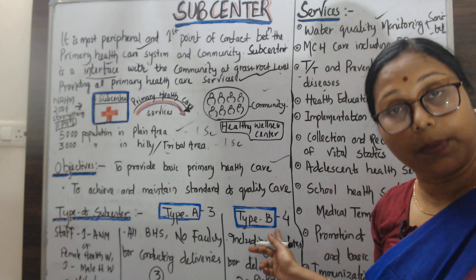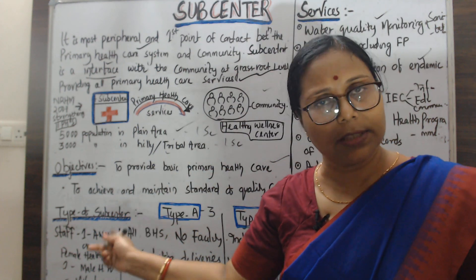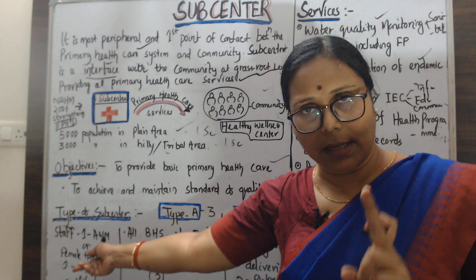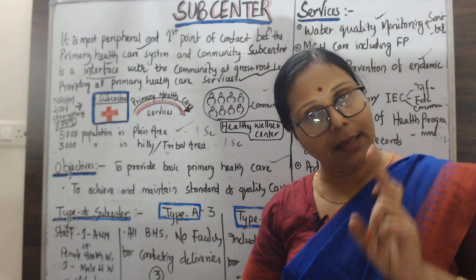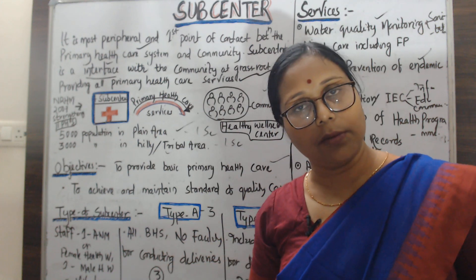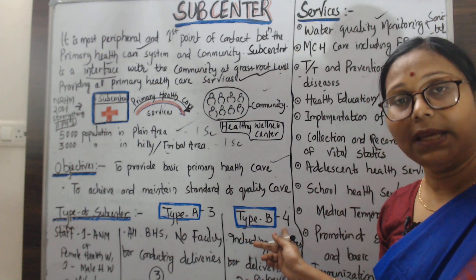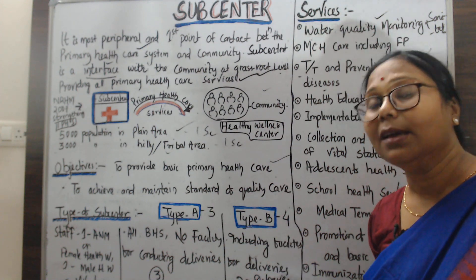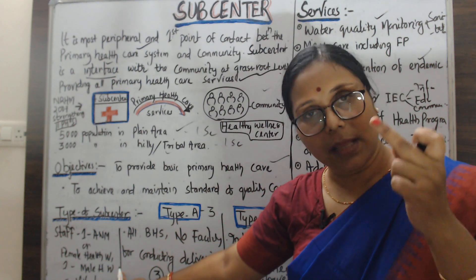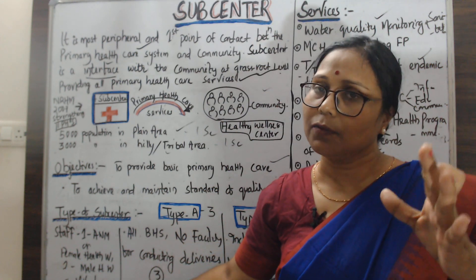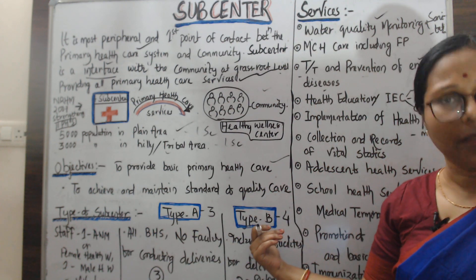Let's see the staffing pattern. In Type A, there are three staff: one Auxiliary Nurse Midwife (ANM) or female health worker, one male health worker, and one voluntary worker — approximately three persons in a Type A sub-centre. In Type B, since they conduct deliveries, one additional staff is required: two female health workers, one male health worker, and one voluntary worker — so four staff in a Type B sub-centre.